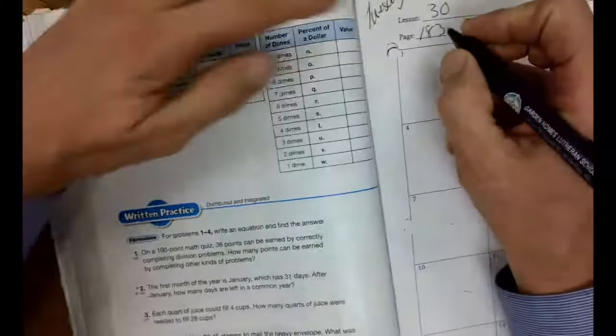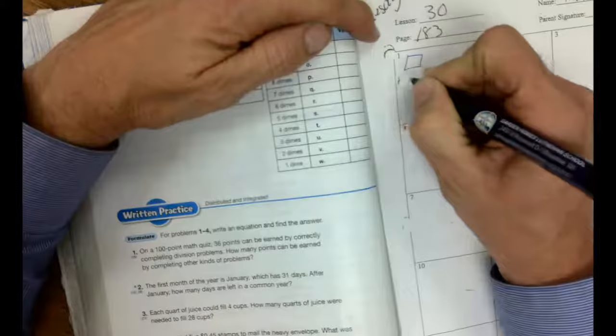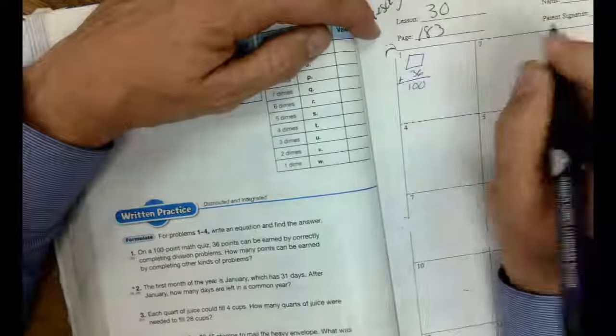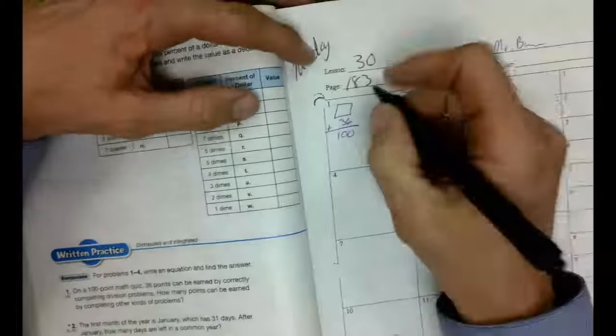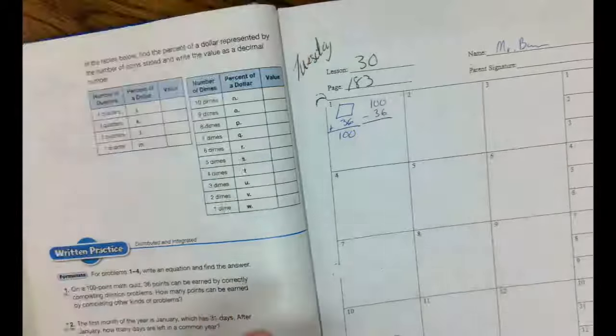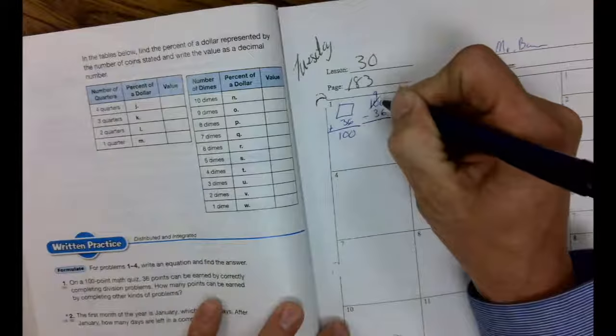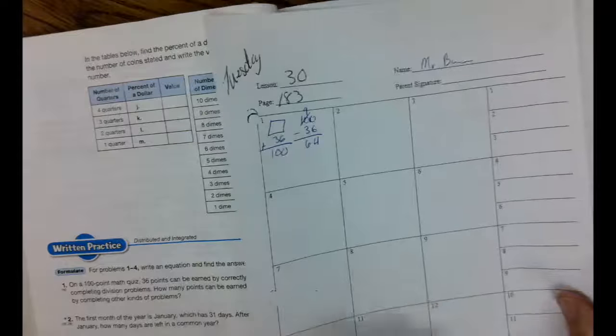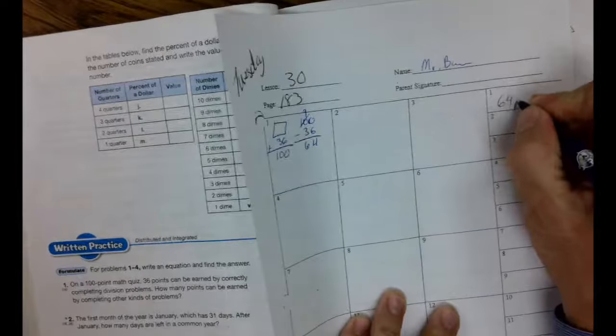So this is like a missing addend. We've got other kinds of problems plus our 36 division problems equals 100. Whenever we have a missing addend, remember, we're going to subtract. So we'll cross out 10 and make it a 9. 10 minus 6 is 4, and 9 minus 3 is 6. The other problems are 64. I'm going to say 64 problems.